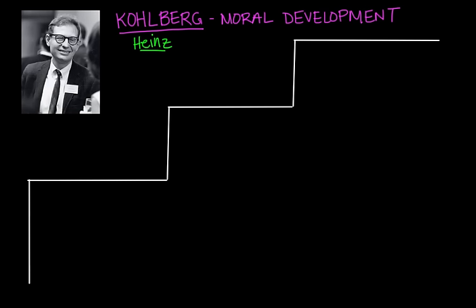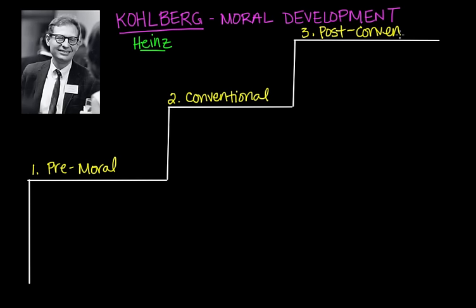The first level is the pre-conventional or pre-moral stage. The second is the conventional stage. And the last is the post-conventional stage. Think of this as a ladder of morality. Kohlberg said that people can only pass through these levels in the order listed, and each new stage replaces the reasoning typical of the earlier stage. He also said that not everyone achieves the last stage.